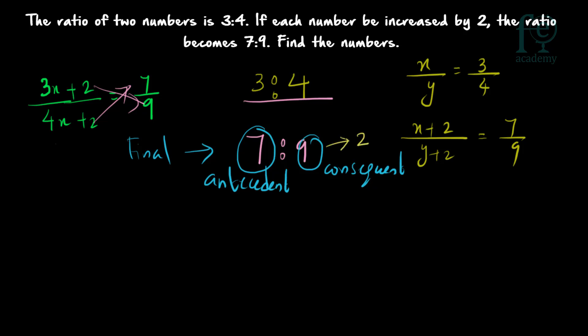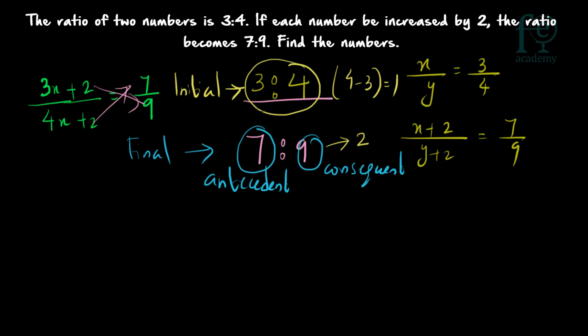The difference between antecedent and consequent in the final ratio is 9 minus 7, equal to 2. You have to change the initial ratio in such a way that the difference also becomes 2. In the initial ratio, the difference between antecedent and consequent is 4 minus 3, equal to 1. So you have to make it 2. You can multiply by 2, and the initial ratio becomes 6 is to 8. Now 8 minus 6 is equal to 2, so the differences match.